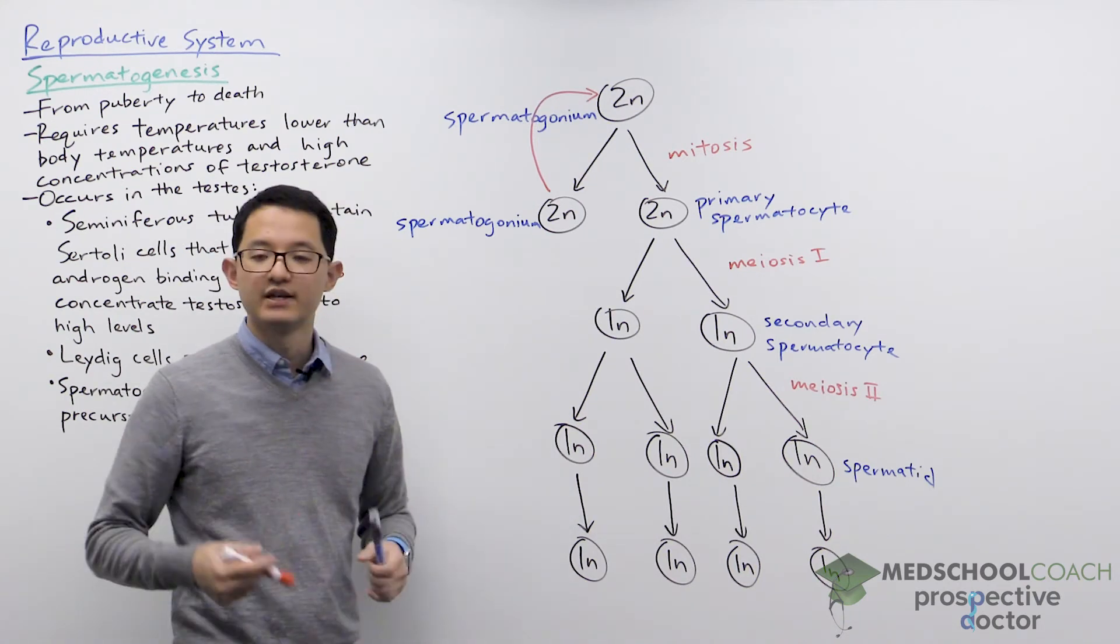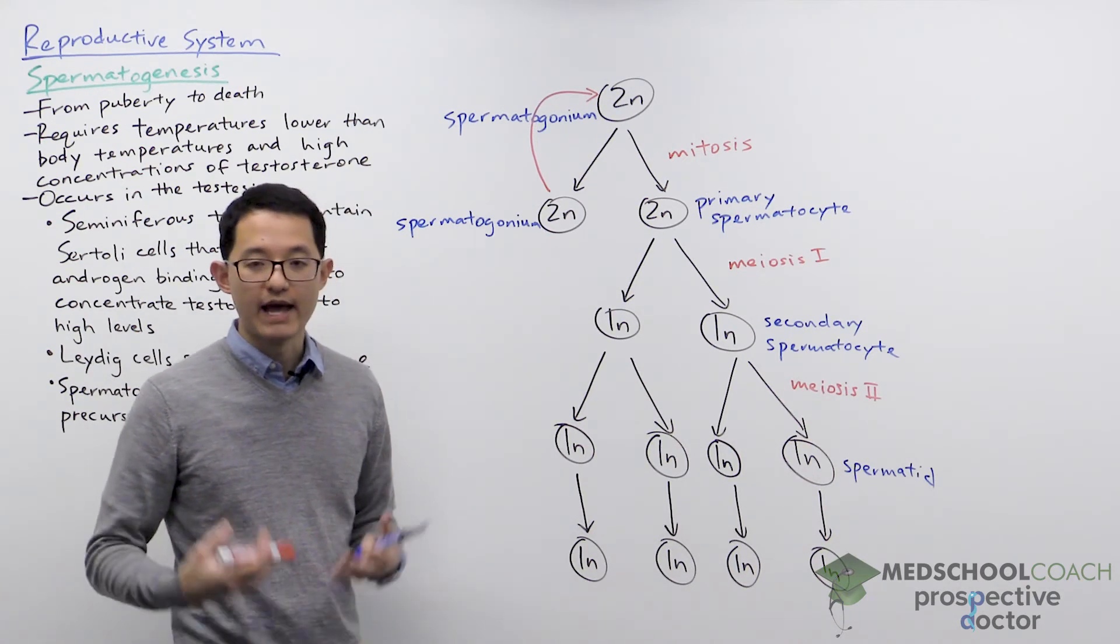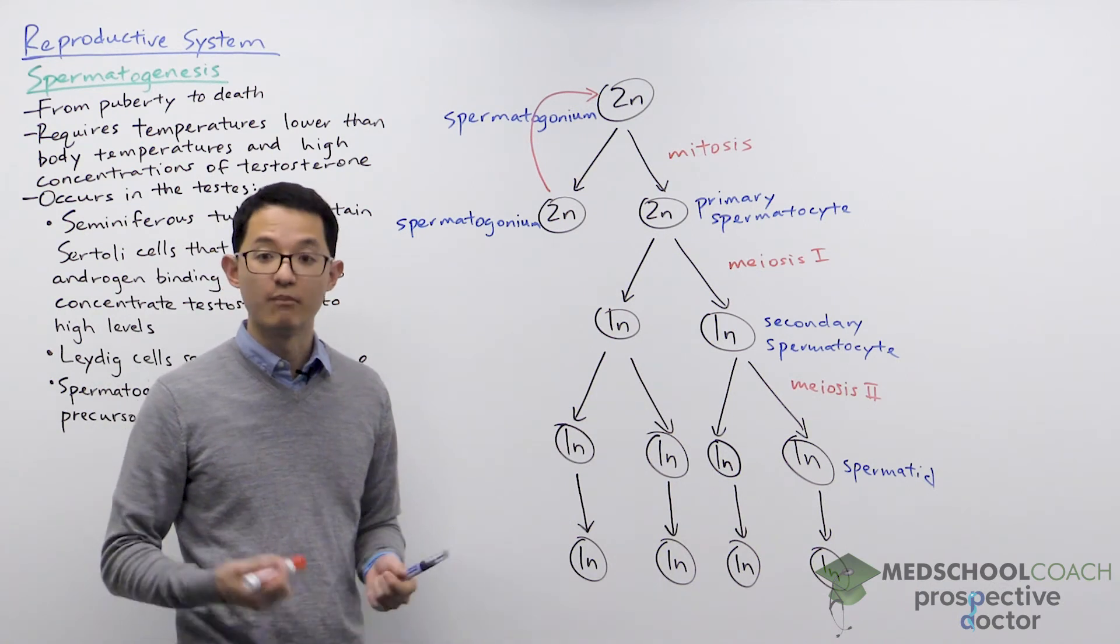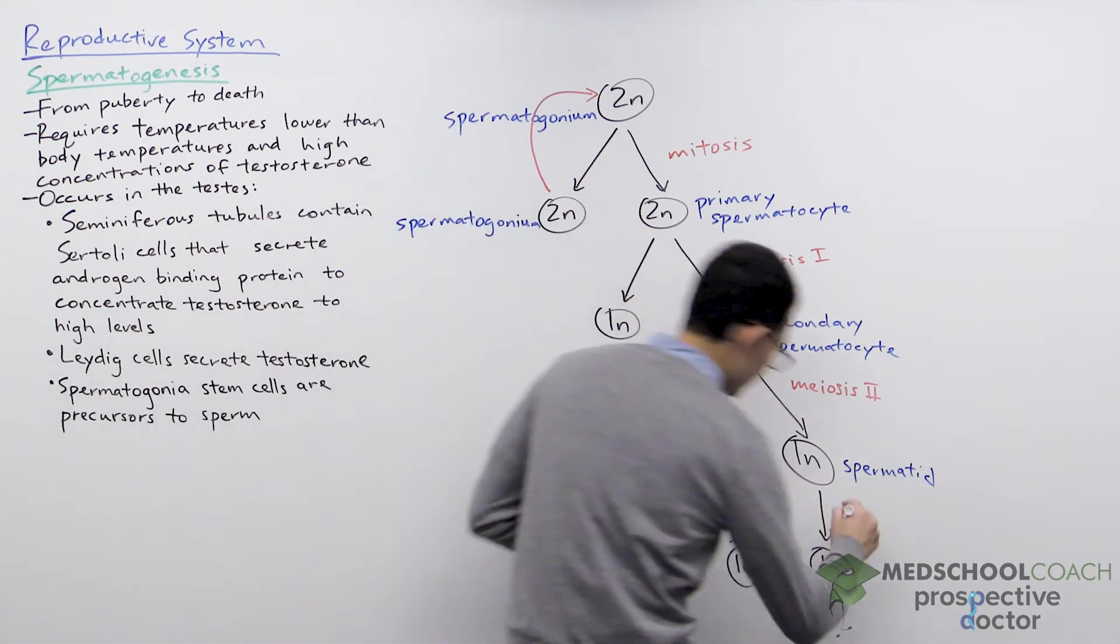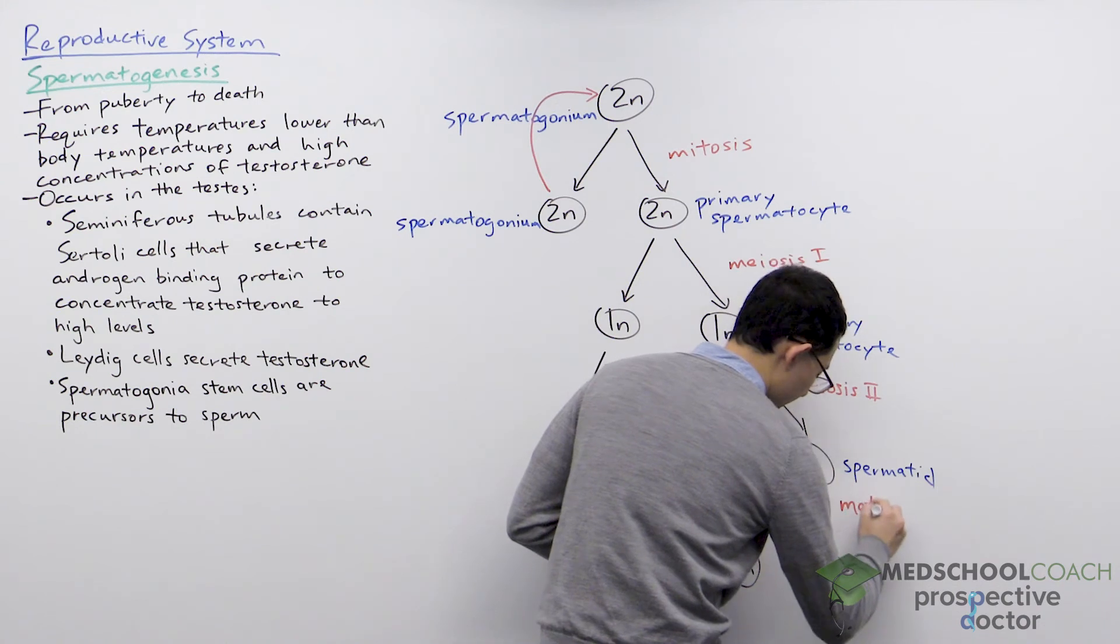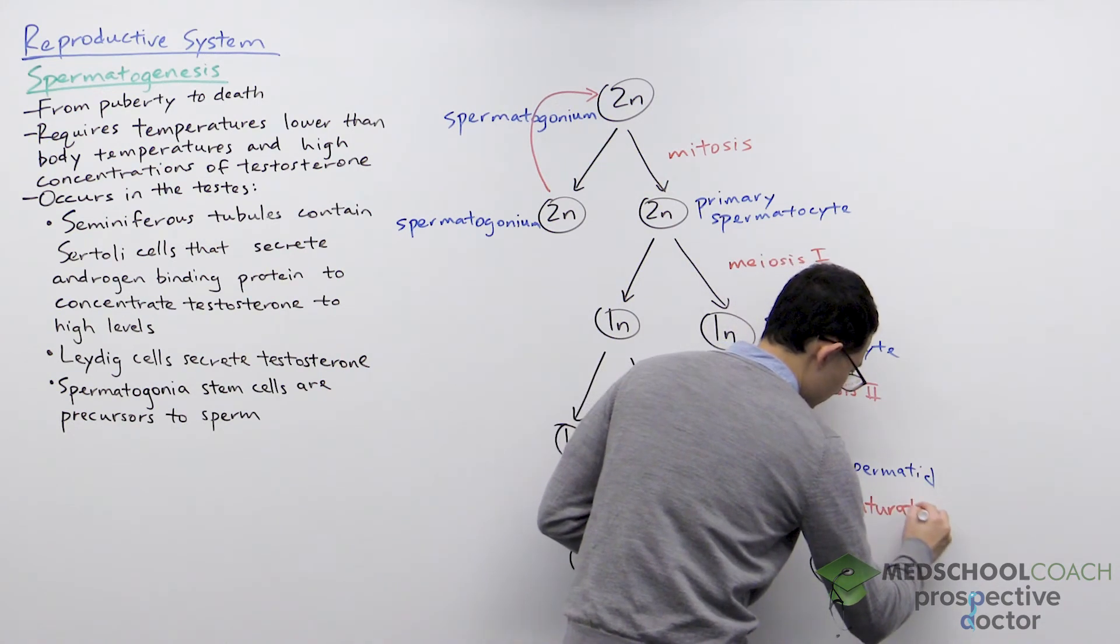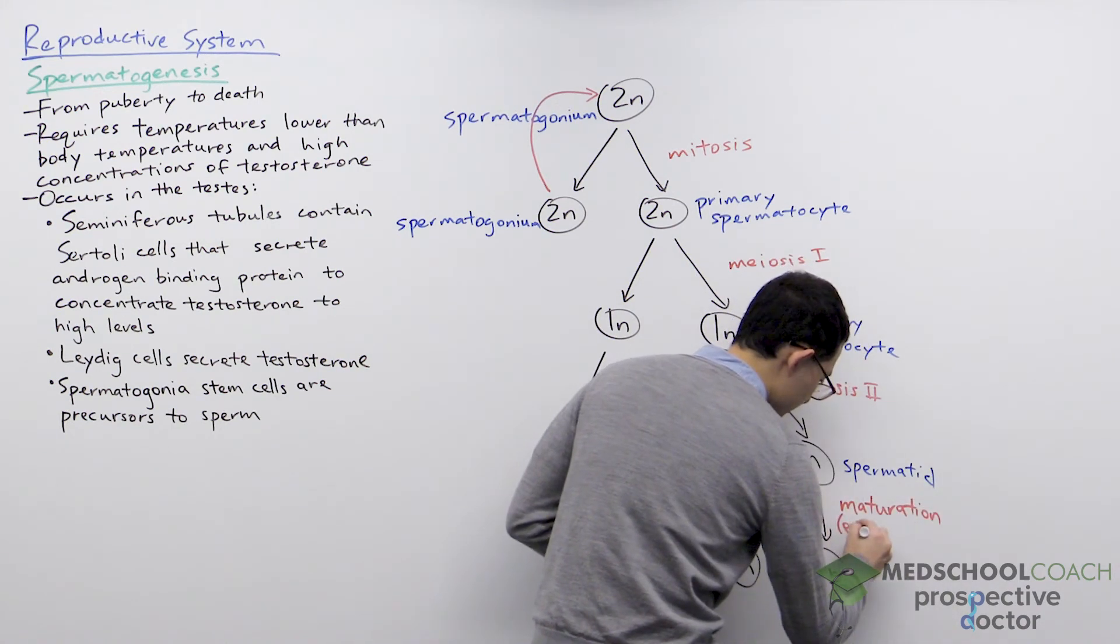So these spermatids will enter the epididymis and within the epididymis they'll undergo a maturation process. This maturation occurs in the epididymis.